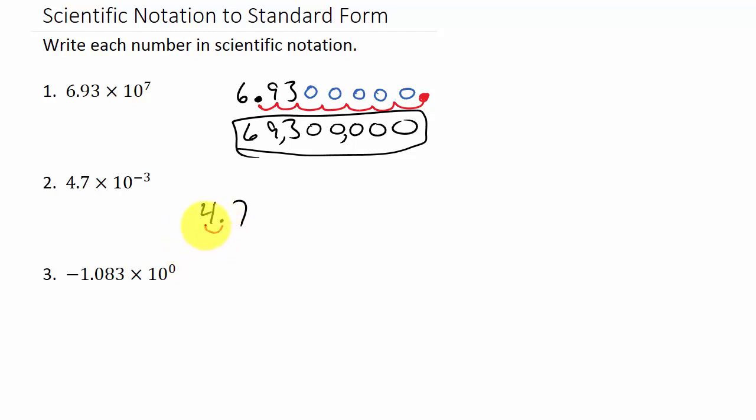And so, we've got 1, 2, 3. So, I would need a zero here and here. And the decimal would be here. And so, this would be 0.0047. And this would be the number in standard form.